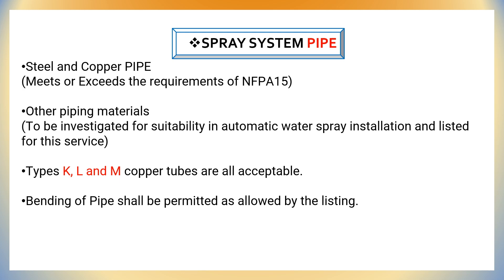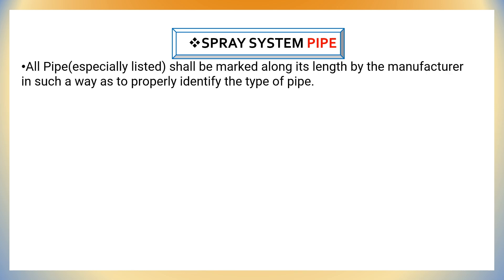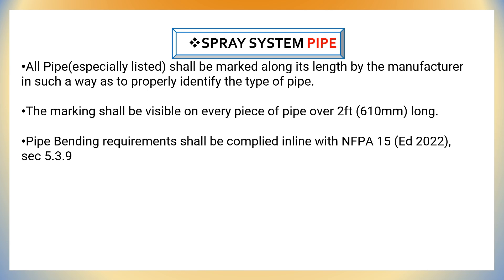Pipe bending shall be permitted as allowed by the listing. In most cases we are going to bend the pipe as per project site requirements. Pressure limitations and wall thickness for steel pipe shall be in accordance with NFPA 15 clause 5.3.5. All pipes, including specially listed pipe, shall be marked along their length by the manufacturer, and the marking shall be visible on every piece of pipe over 2 feet long. Pipe bending requirements shall be in compliance with section 5.3.9 of NFPA 15 edition 2022.